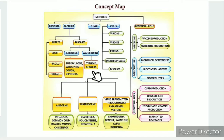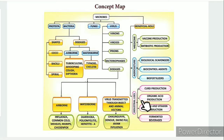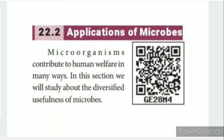This unit has 9 topics. In the first topic, we looked at microorganisms — bacteria, fungi, and virus. Now in the applications of microbes, there are 3 applications: in agriculture, how microbes help with manure; in industry, how microbes help; and in medicine, how microbes help.